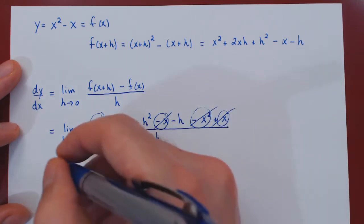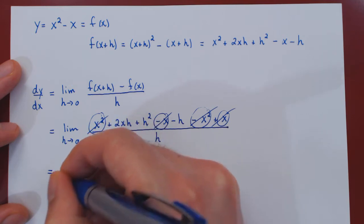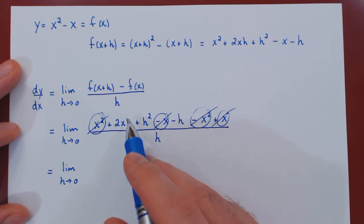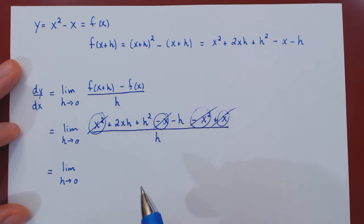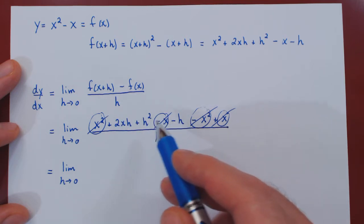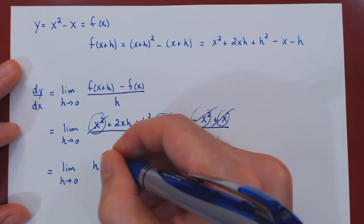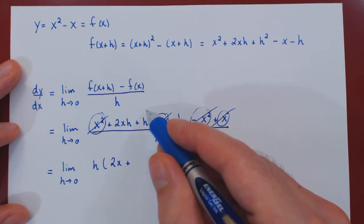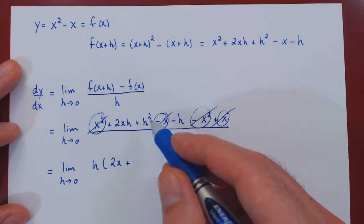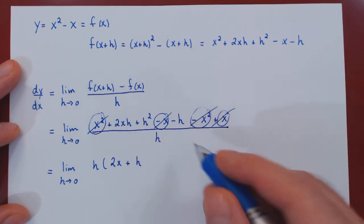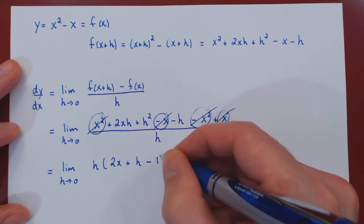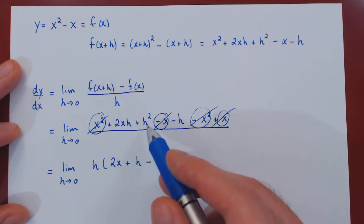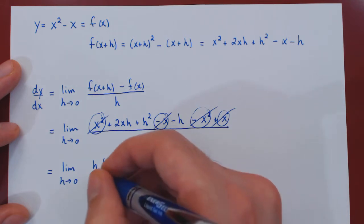We're left with three terms, and what is key is that each one of them is multiplied by h. So let's factor h from the three remaining terms. This gives us h times 2x plus h minus 1, all over h — since factoring h from h squared leaves h, and factoring h from h leaves 1.